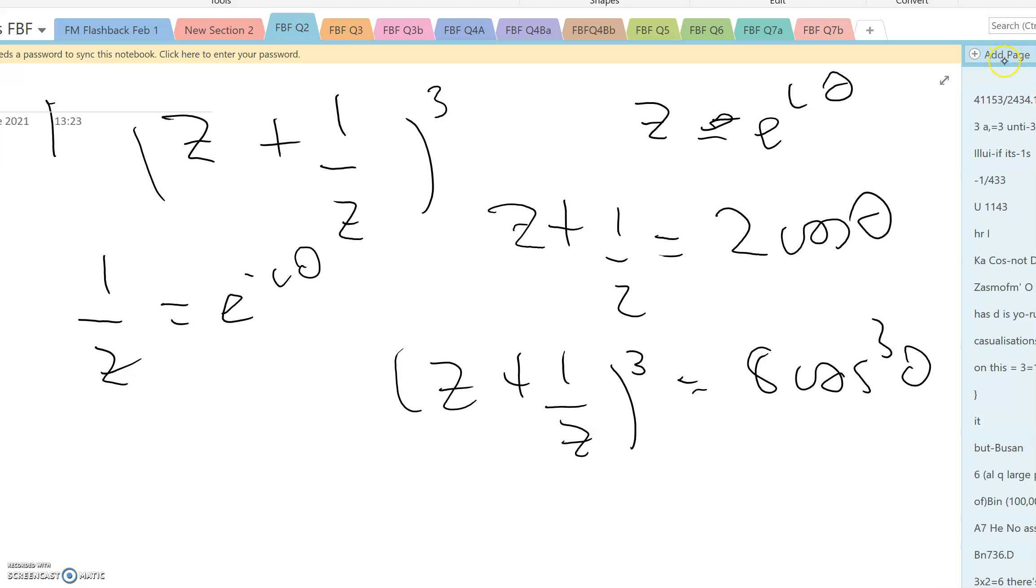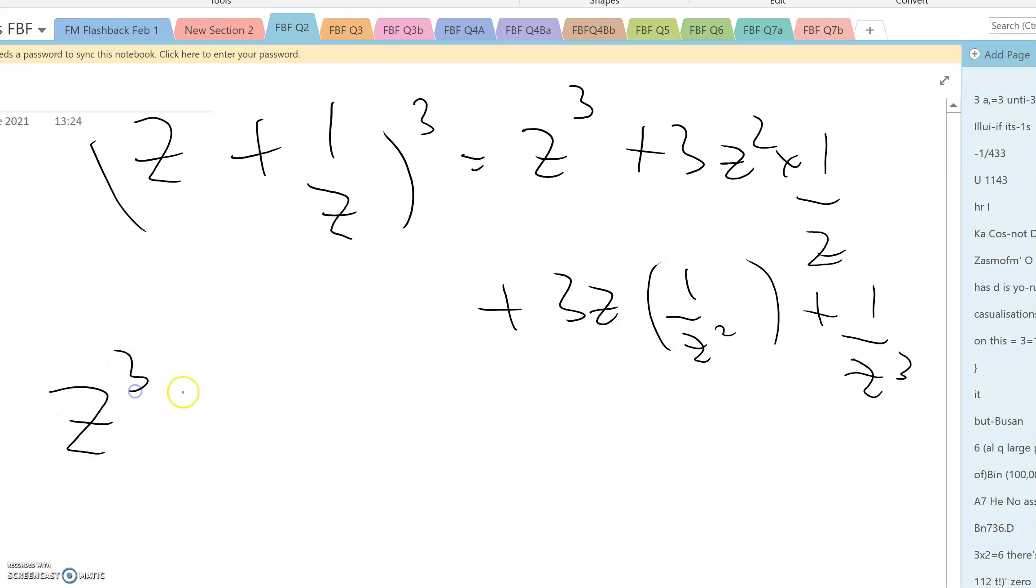But the next stage is to work out z plus 1 over z cubed by another method, namely its binomial expansion: z cubed plus 3 times z squared times 1 over z plus 3z times 1 over z squared plus 1 over z cubed. So that's going to be z cubed plus 1 over z cubed plus 3z plus 3 over z.